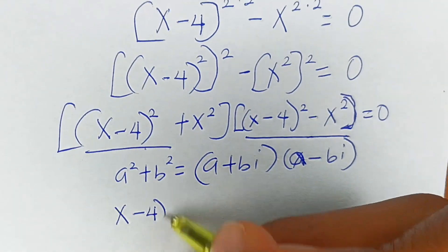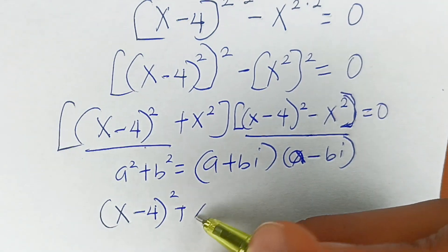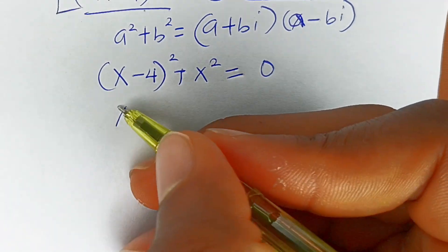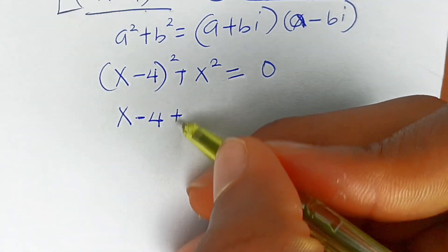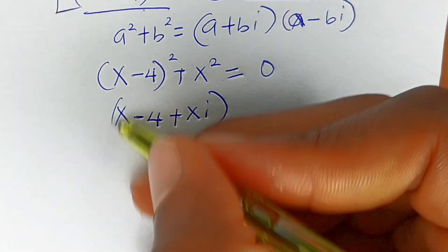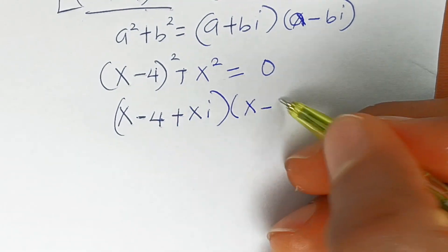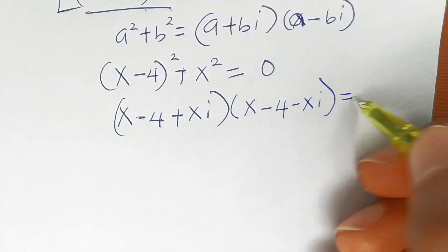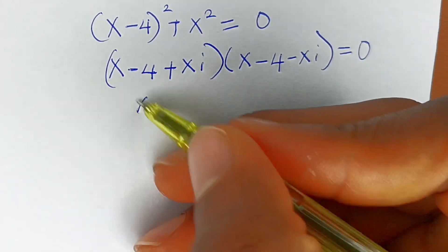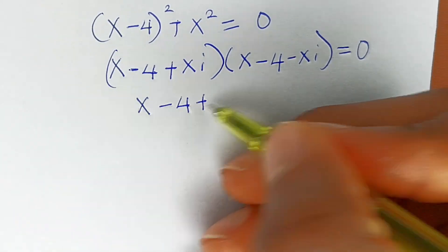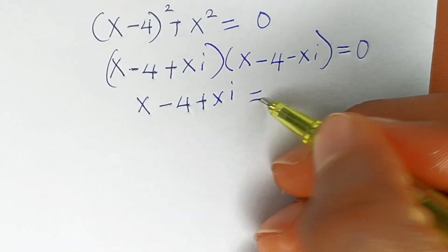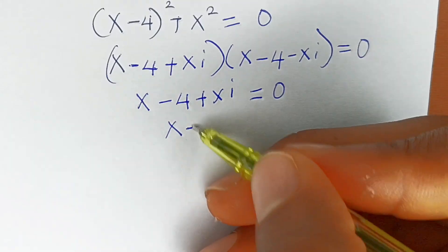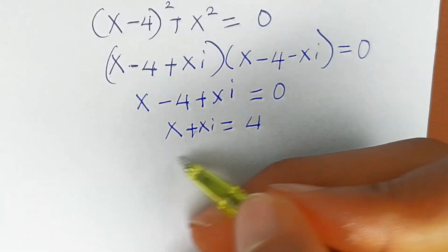When two things multiply to give zero, either the first equals zero or the second equals zero. So it's either (x minus 4) squared plus x squared equals 0. Applying the sum of two squares law, this becomes (x minus 4 plus xi)(x minus 4 minus xi) equals 0.